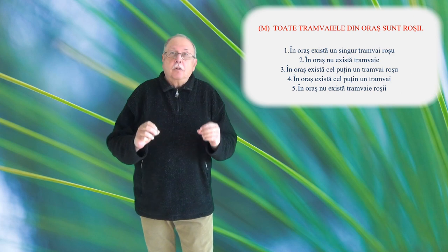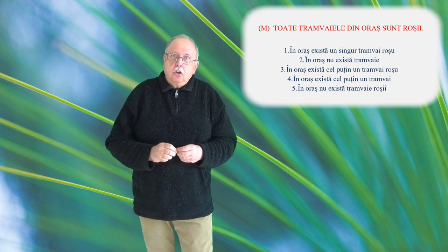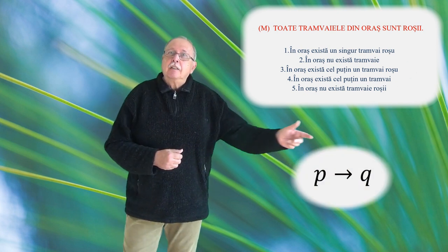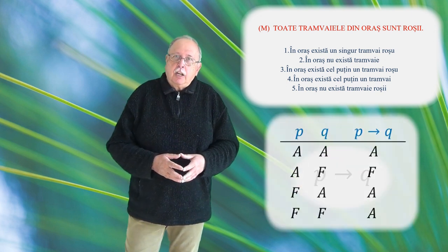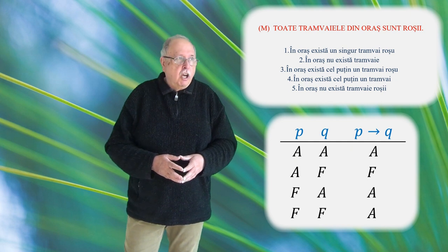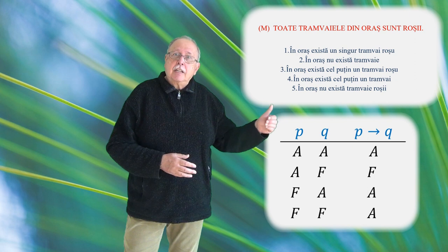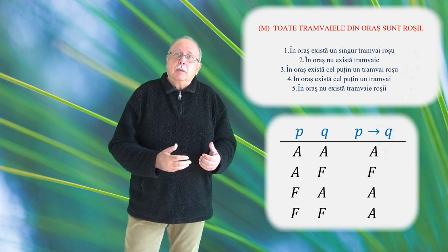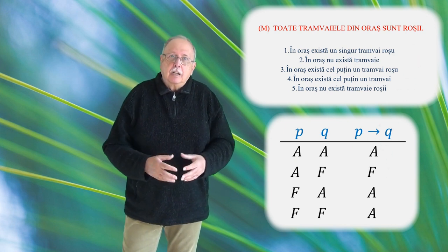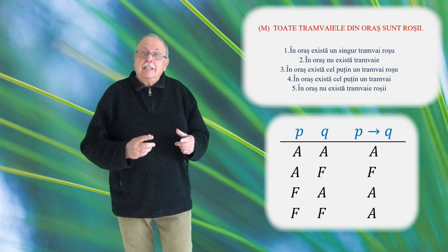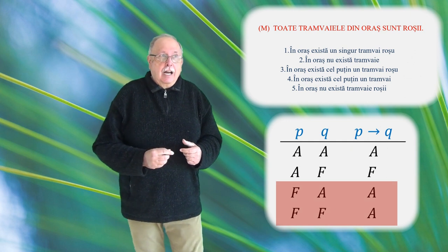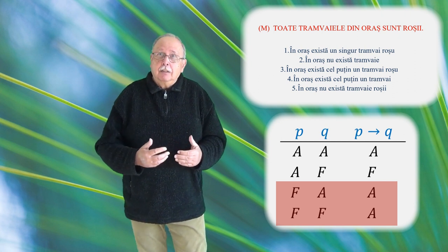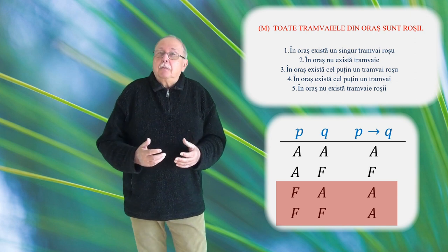Dacă nu v-am convins, să folosim regulile logicii. În logică lucrăm cu propoziții de tipul P implică Q, sau din P rezultă Q, notate P săgeată Q. Și vă rog să priviți tabelul pentru valoarea de adevăr a propozițiilor logice. Avem afirmațiile P și Q și afirmația dacă P atunci Q, sau P implică Q. Valoarea lor de adevăr este exprimată prin A dacă sunt adevărate și prin F dacă sunt false. Și după cum vedeți, dacă P este falsă, atunci afirmația, dacă P atunci Q, este adevărată indiferent de valoarea de adevăr a afirmației Q. E un adevăr fără sens,